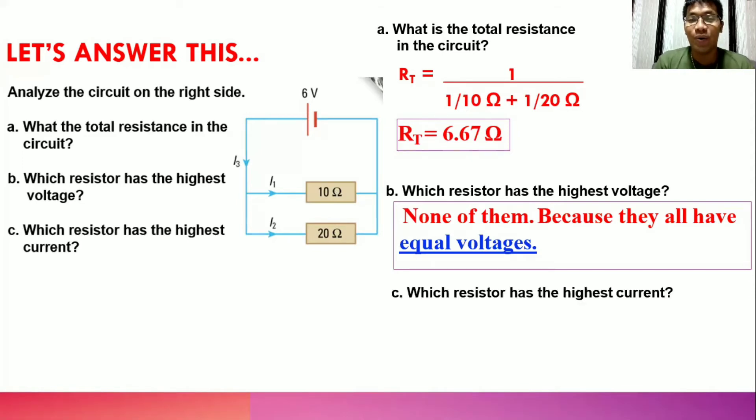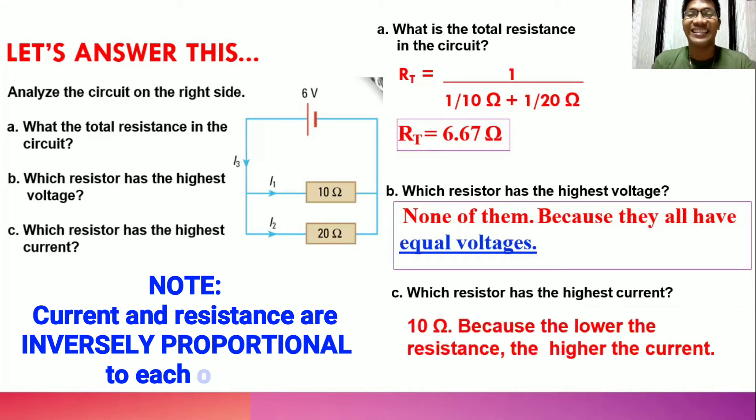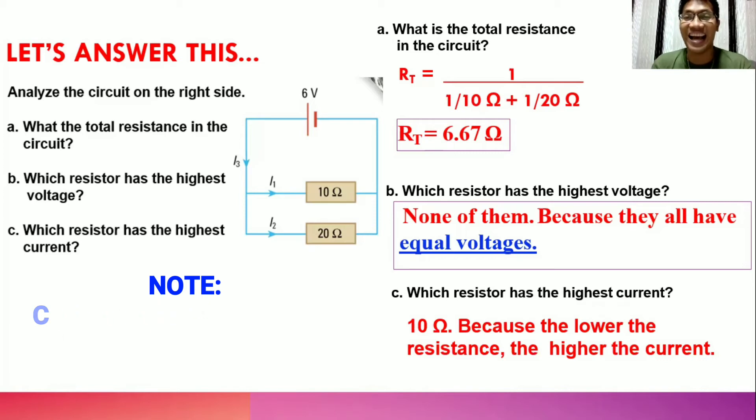Letter C: Which resistor has the highest current? For us to answer this question, we have to apply the concept we have learned about the relationship between current and resistance, and we know that they are inversely proportional. The answer is the resistor with 10 ohms, because the lower the resistance, the higher the current. You have to remember again, they are inversely proportional.